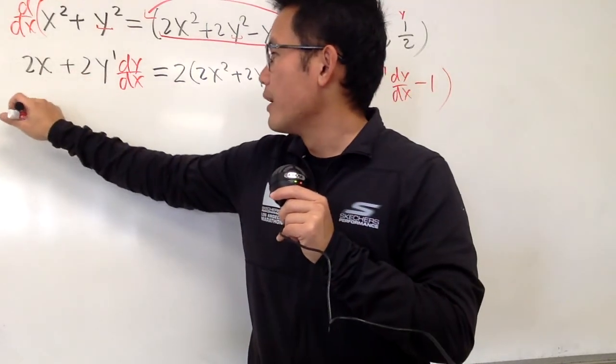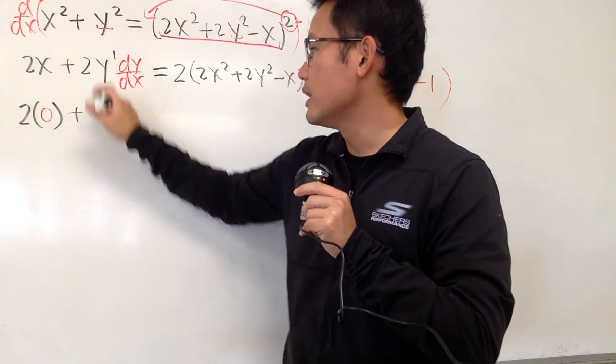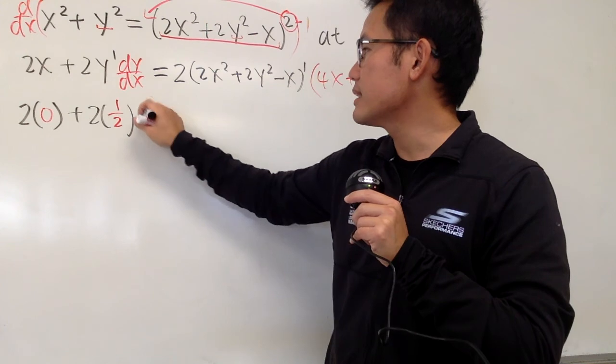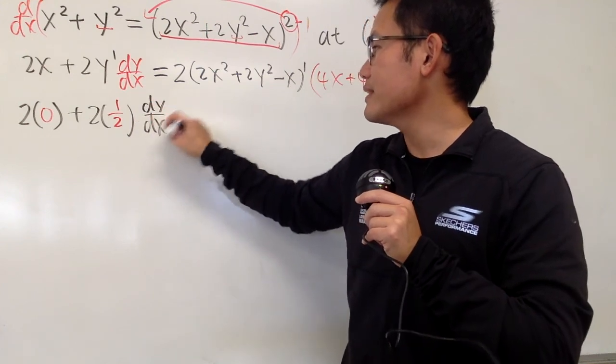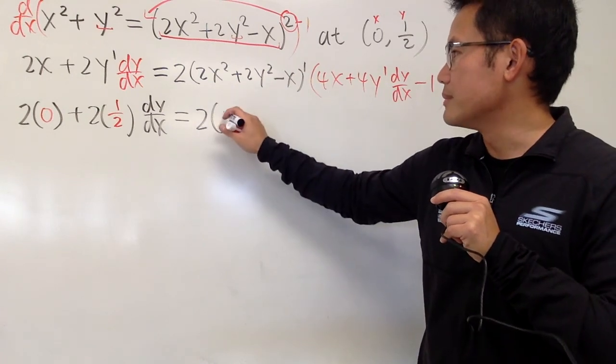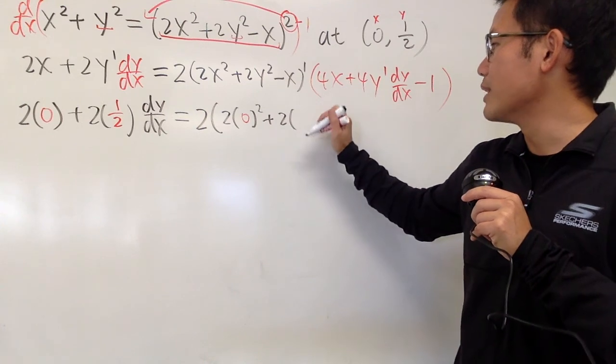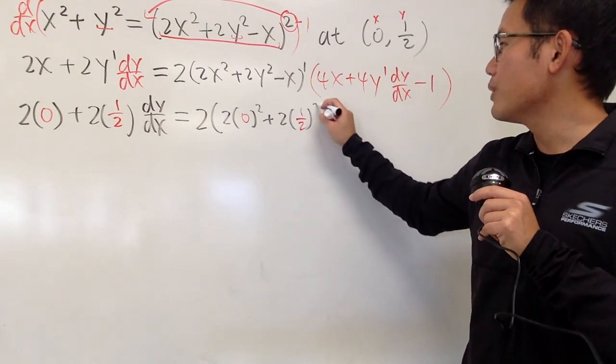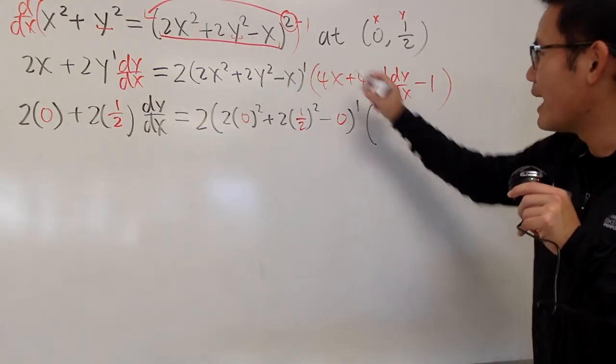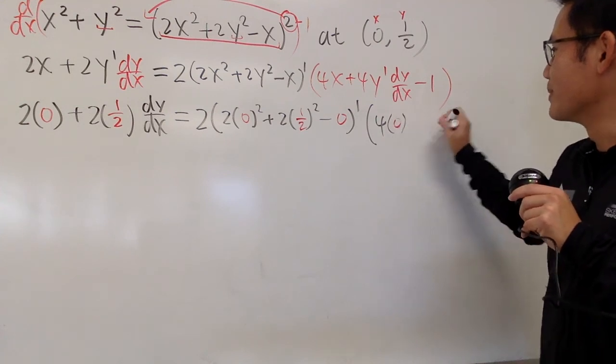So, have a look. So, x is 0, so we have 2 times 0, and then we add 2 times the y is 1 half. And then, we have the dy dx, right here. And, that's equal to, and again, just pretty much do the rest. So, we have 2 times 2 times 0, square plus 2 times 1 half, and we square that, and then minus 0, and then to the first power. And then, multiply by 4, thanks to the 0 seriously. Otherwise, the computation will be outrageous.